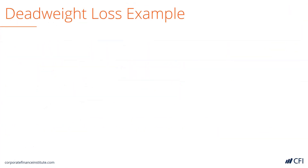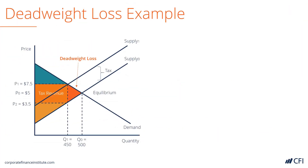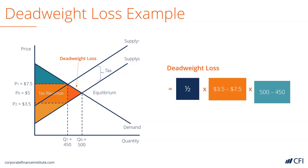If we apply this to our example earlier, that would be 1/2 times (3.5 minus 7.5), which is negative 4, times (500 minus 450), which is 50. So, that was 1/2 times negative 4 times 50, equaling negative 100. The deadweight loss caused by taxation is $100.